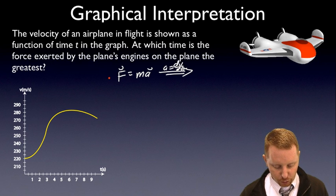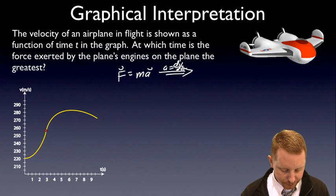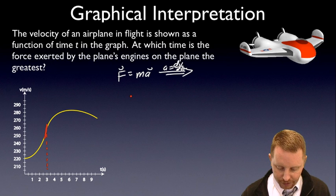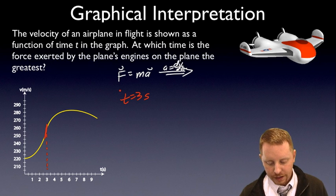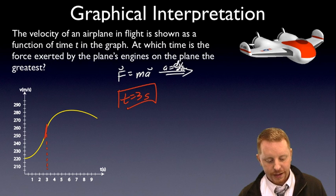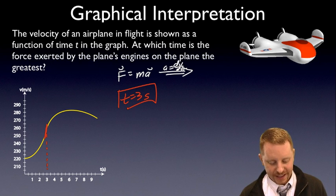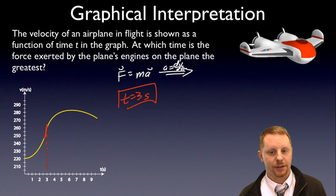As I look at my graph here, where do I have the greatest slope? Looks like my greatest slope is right around in there. So if I extend that down, I would say right around t equals three seconds would give me the greatest force. And if I had that exact function, I could take the derivative and solve for that specifically.